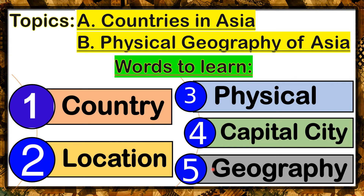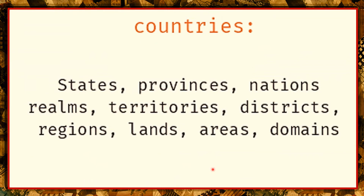Now let's discuss these words one by one. Country means states, provinces, nations, realms, territories, districts, regions, lands, areas, and domains.